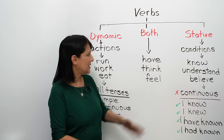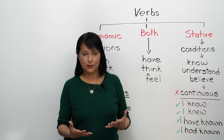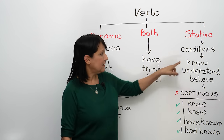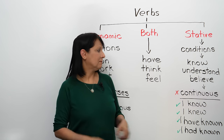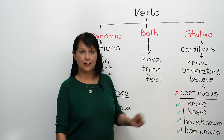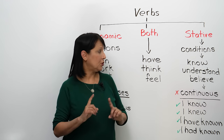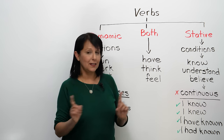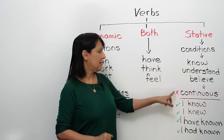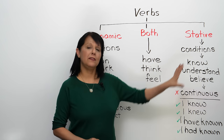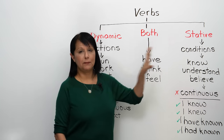Let me give you the examples. Examples of a stative verb: know — I know, I understand, I believe. I can say that, but I should not be saying, and cannot say in correct English, 'I am knowing.' No continuous forms. And this is where the majority of mistakes are made.